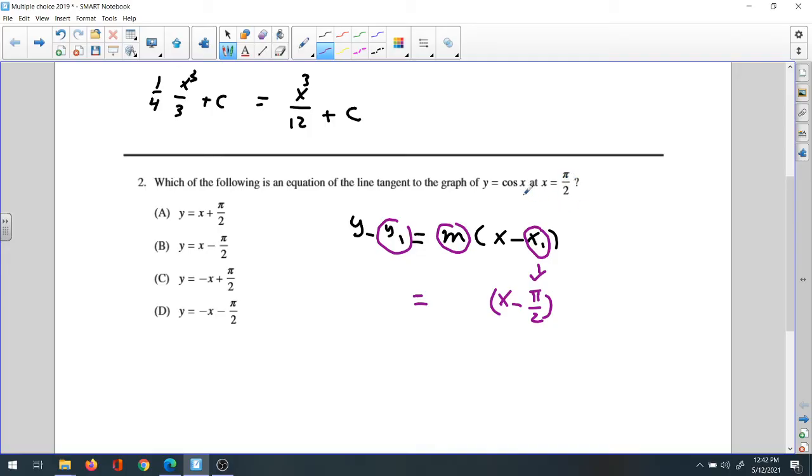then it will be y equals cosine π/2. π/2 is 90, and cosine 90 is the same as sine 0, which is 0.